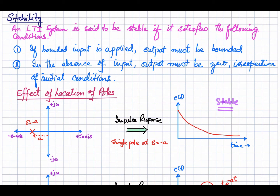We are taking the impulse response because it gives us information about the transfer function of the system. In the s-domain the Laplace transform of the impulse is one, so if the input is one and g(s) is the system, the output equals the transfer function. This is basically giving us the information of the transfer function.